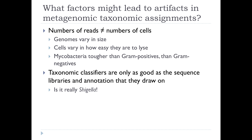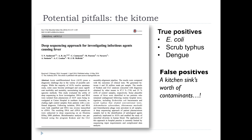The other problem is that taxonomic classifiers are only as good as the sequence libraries and annotations they draw on. We already mentioned the Staph aureus plasmid misidentification issue. A particular bug of mine is seeing Shigella reads assigned in samples where it doesn't belong. Shigella is actually just a pathovar of E. coli — a human-specific pathovar. So if you're looking at, say, the chicken gut and you get reads assigned to Shigella, you have to say: no, that's not really Shigella. That's an E. coli living in that gut that's been misassigned. You have to use your critical faculties.